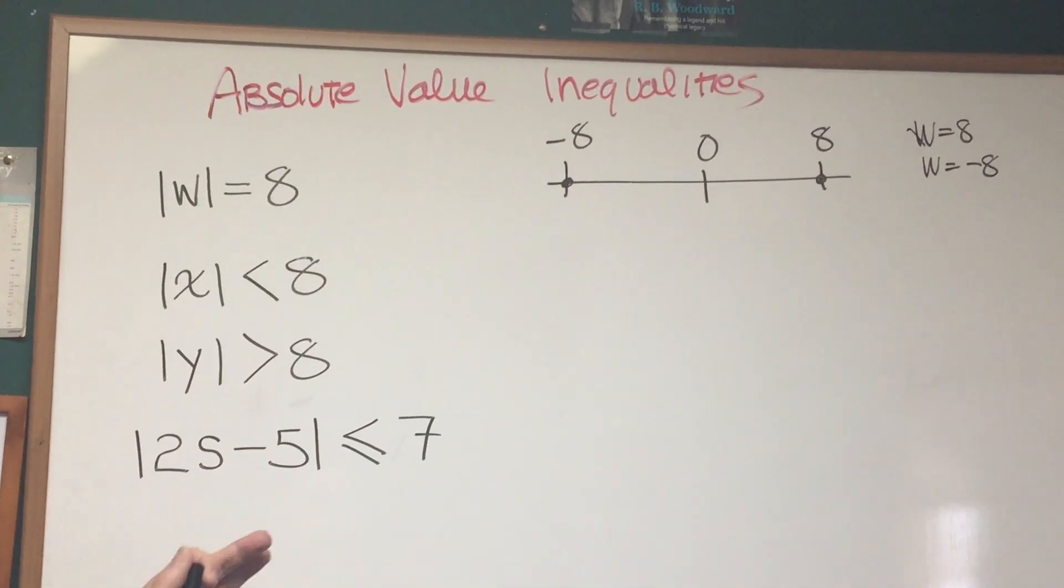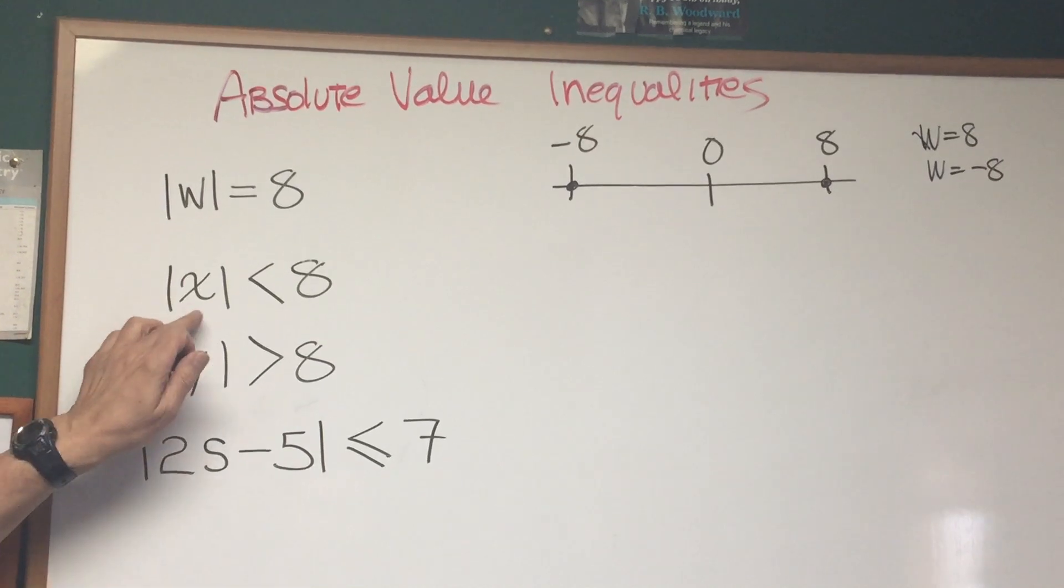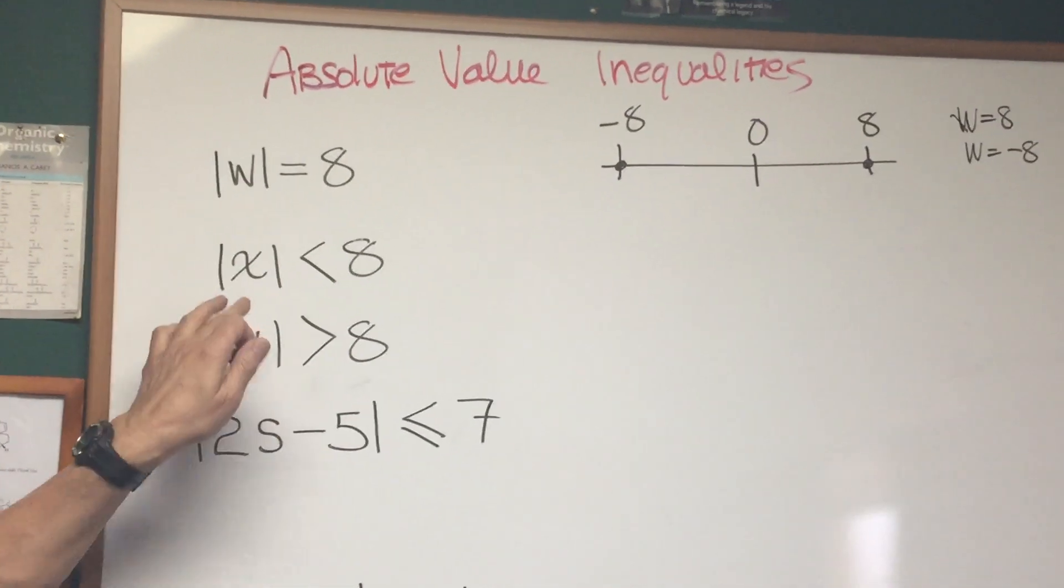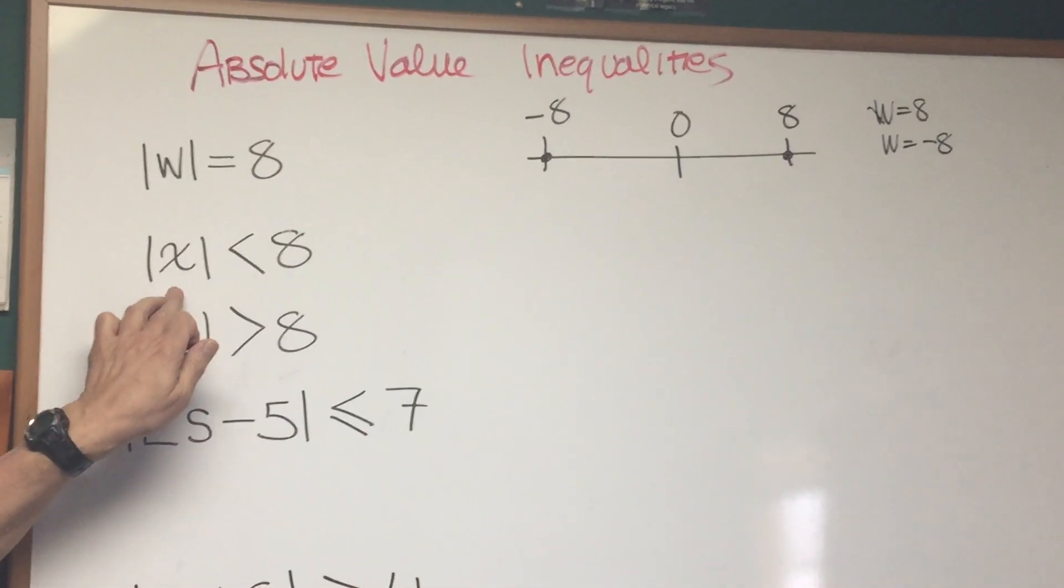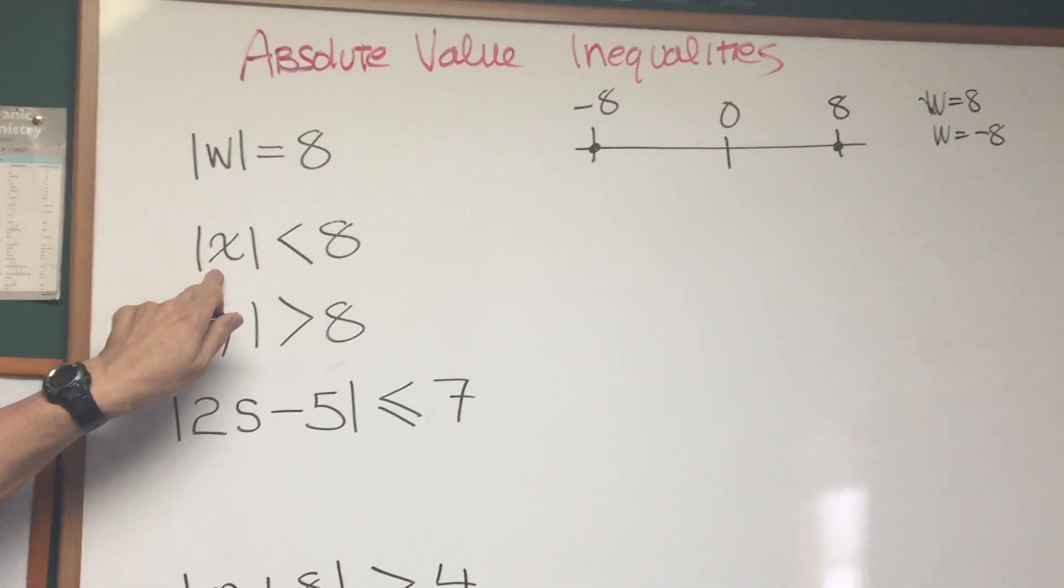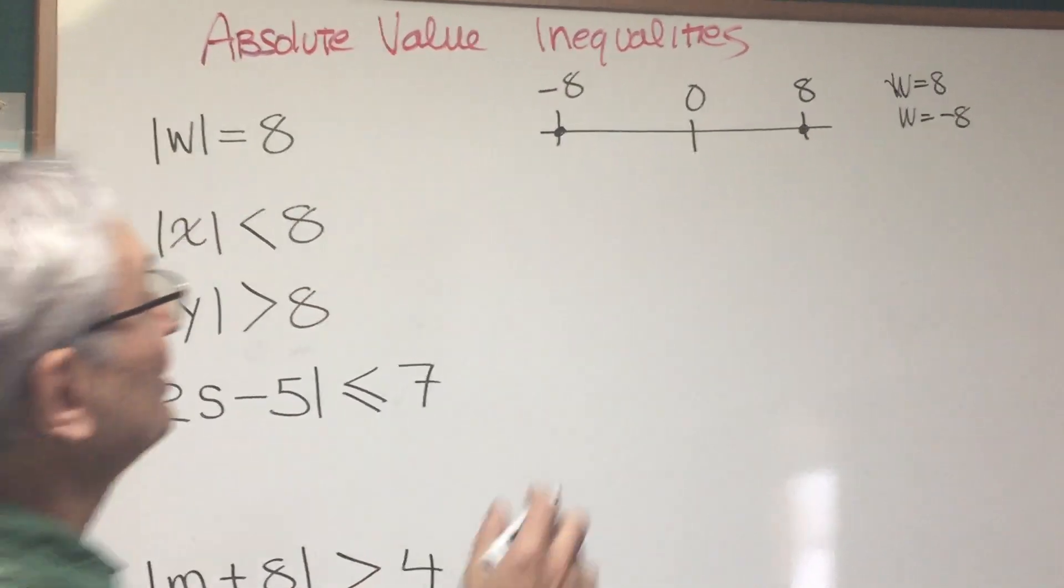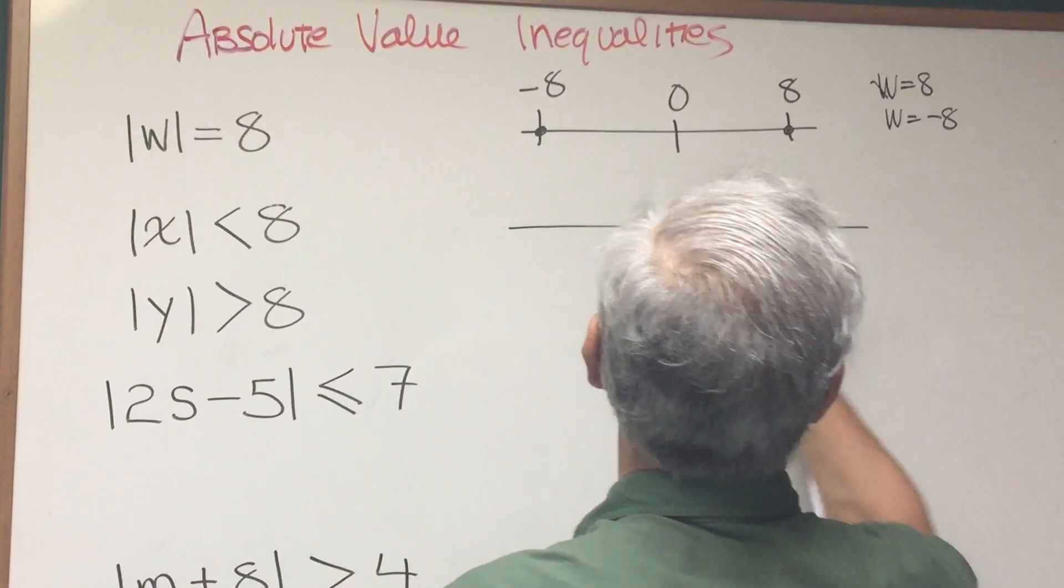Now let's move into the realm of absolute value inequalities. The absolute value of x is less than 8. Well, what does this say? If we go back to our interpretation of absolute value as distance from 0. The distance from 0 is less than 8. Well, since it's absolute value, we're looking in both directions.